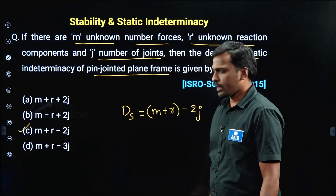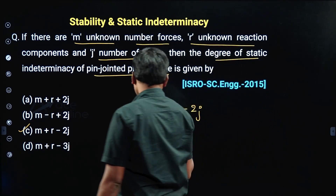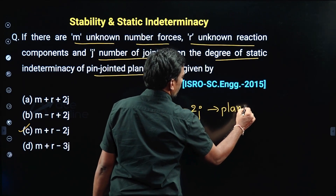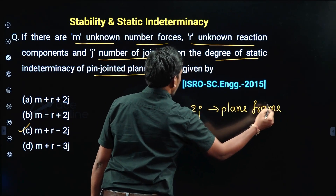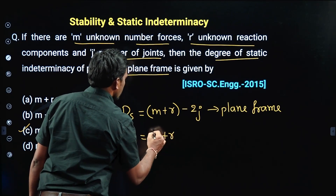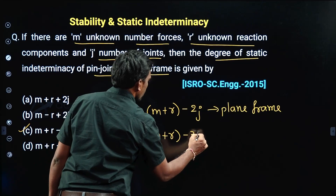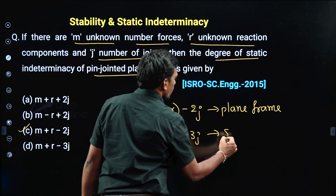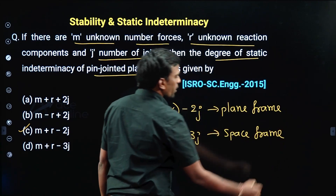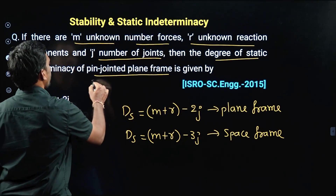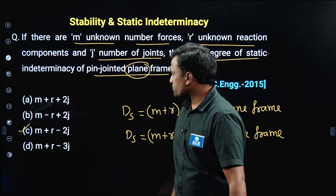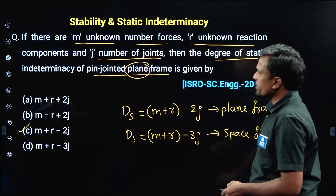This formula DS = M+R−2J is for a pin jointed plane frame. If it is a space frame, the formula is M plus R minus 3J. The question clearly mentions pin jointed plane frame, so we use the plane frame formula.